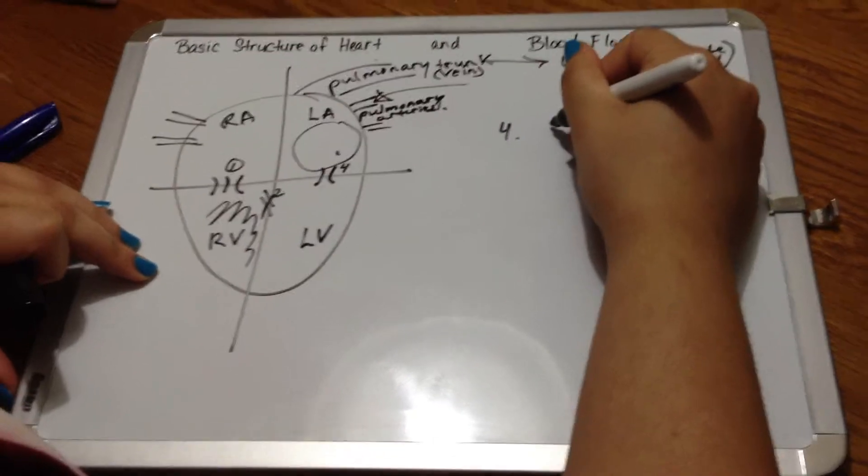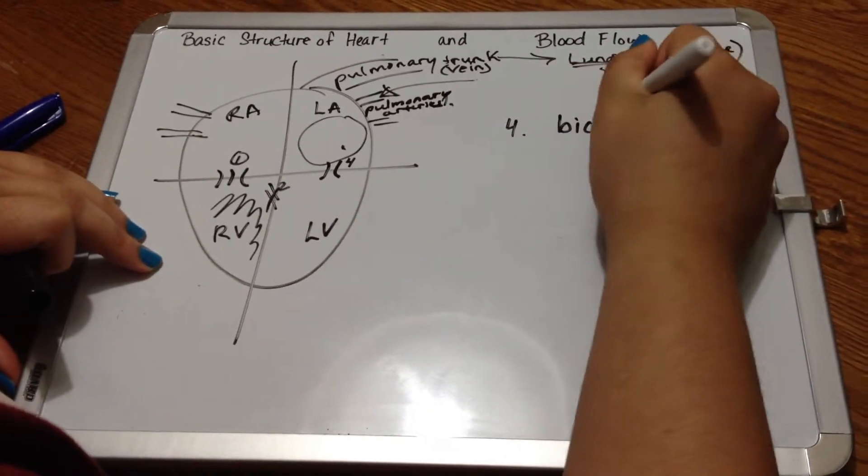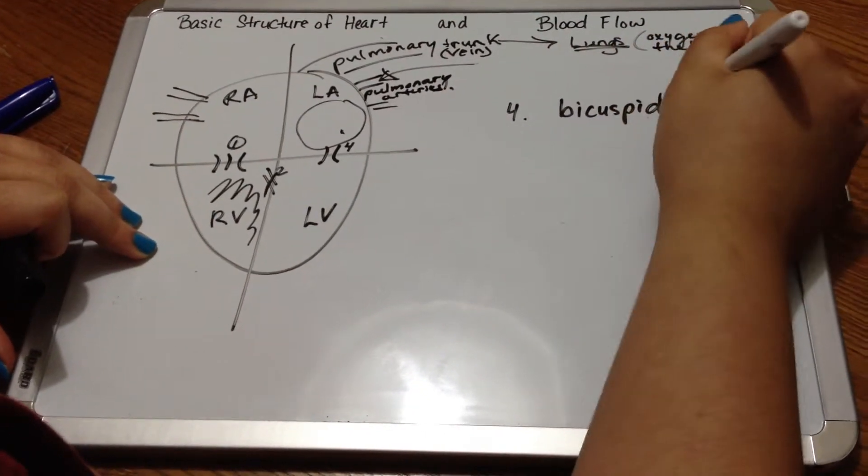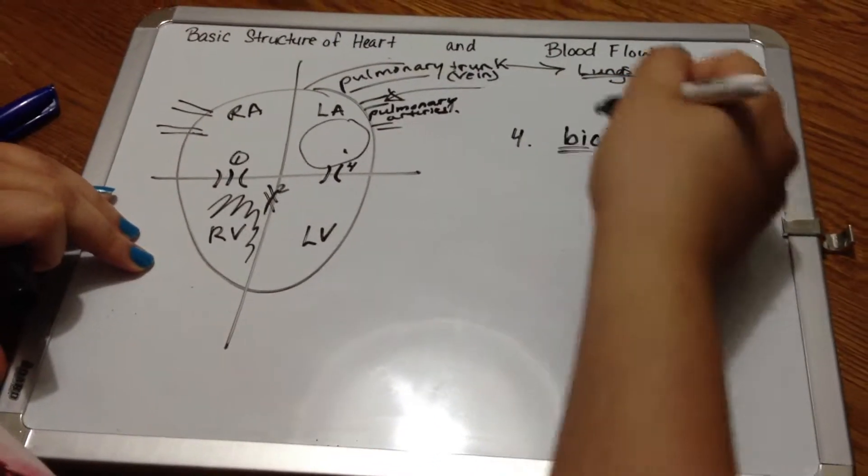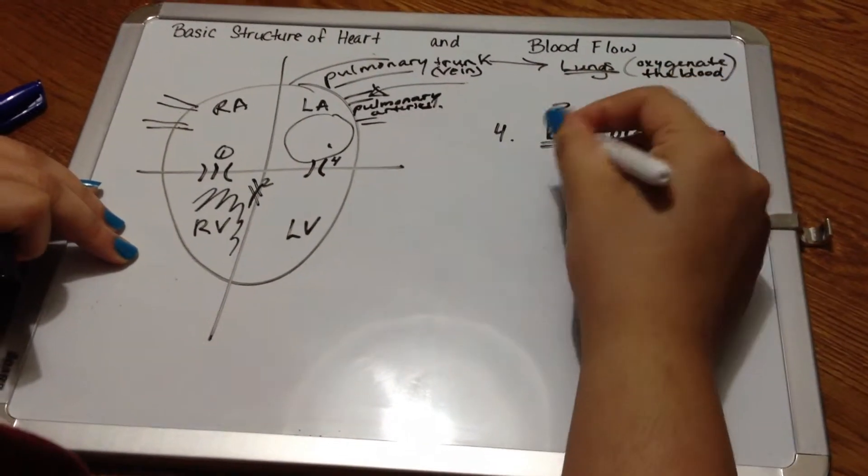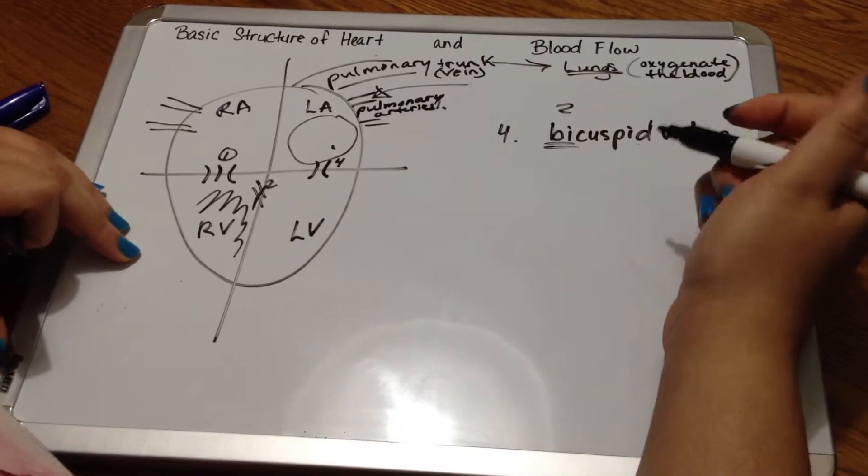Number four here, I'm going to represent as the bicuspid valve. A cool thing about the bicuspid valve, it has two cusps, and it has a total of three different names.